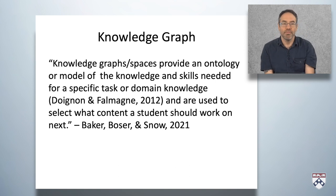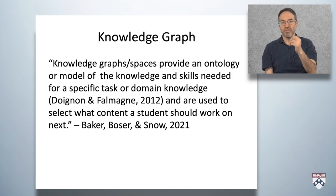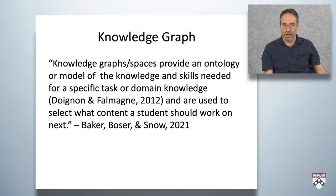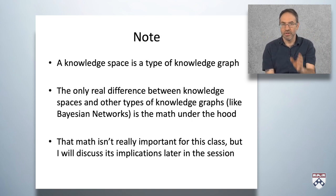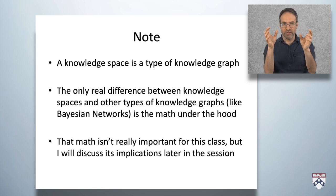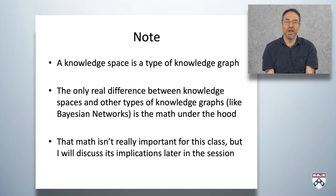According to Baker and his colleagues, knowledge graphs or spaces provide an ontology or a model of the knowledge and skills needed for a specific task or domain knowledge, and they're used to select what content a student should work on next. A knowledge space is a type of knowledge graph — all knowledge spaces are knowledge graphs, but not all knowledge graphs are knowledge spaces. The only real difference between knowledge spaces and other types of knowledge graphs, like Bayesian networks, is the mathematics under the hood. That math isn't really important for this class, but I'll discuss its implications a little bit later in the session.